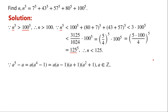Now we consider a to the power of 5 minus a, which can be written as a times (a to the power of 4 minus 1), which factors as a times (a squared minus 1) times (a squared plus 1). Since a is an integer, a to the power of 5 minus a contains the product of two consecutive numbers, a minus 1 and a, so a to the power of 5 minus a must be an even number, meaning it is congruent to 0 mod 2.